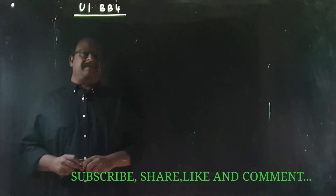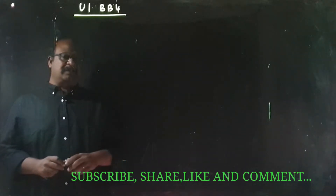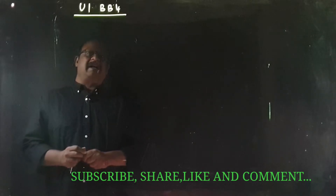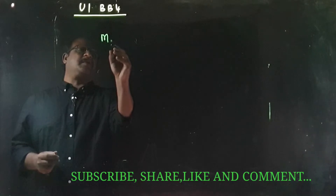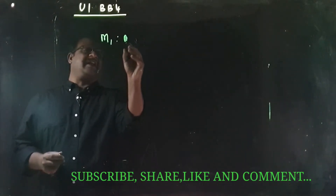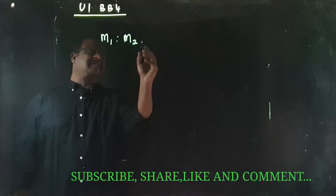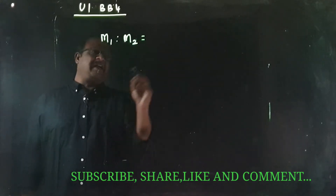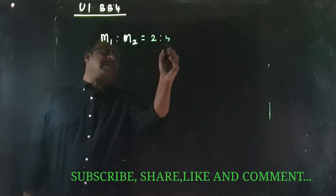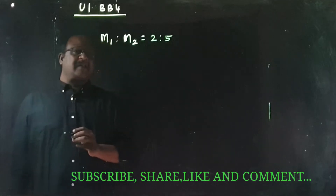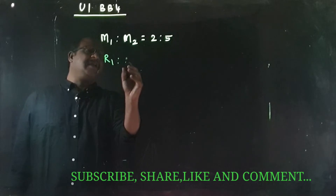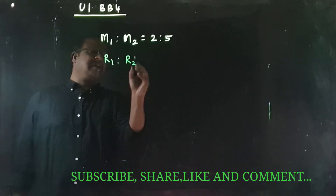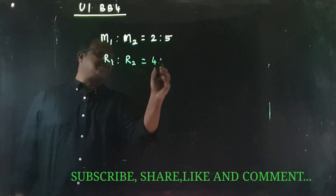In the 1st unit of physics, bookback 4th sum — it's a very simple concept. If you look at the 2 planets and the mass ratio, it's called M1 and M2, which is 2 is to 5. The mass ratio of their radius is 4 is to 7.